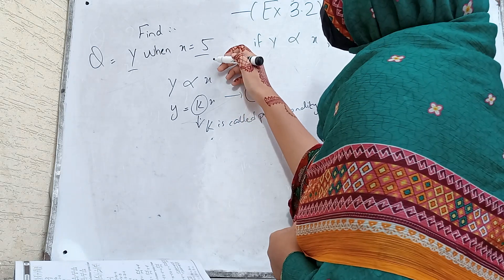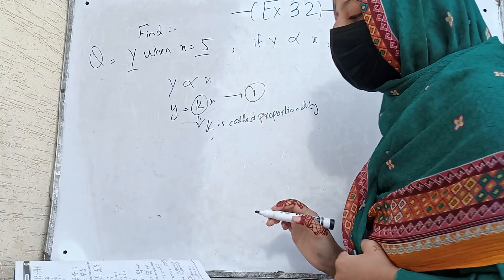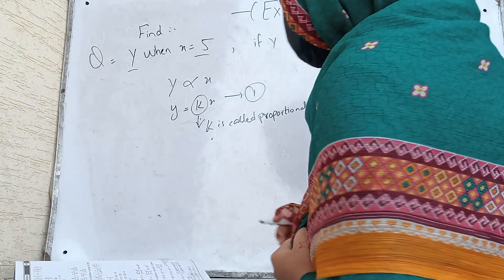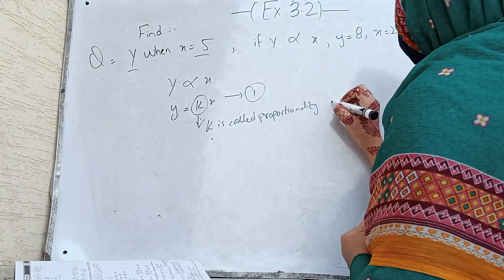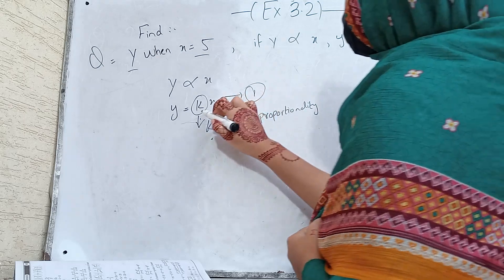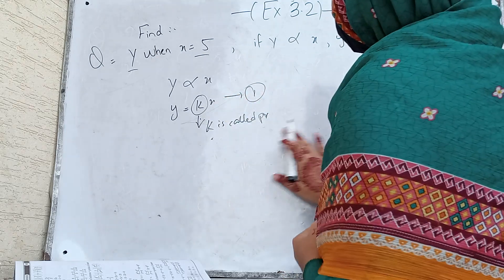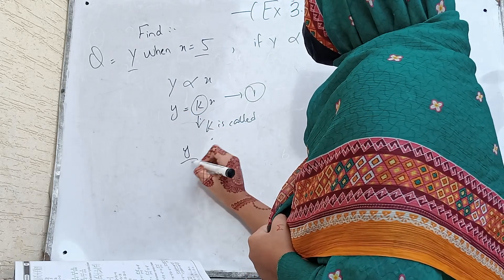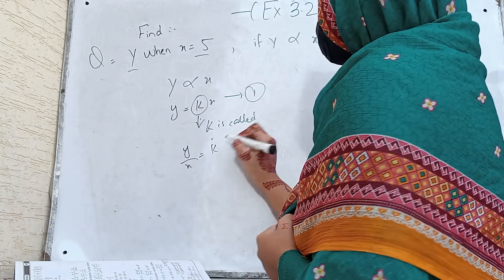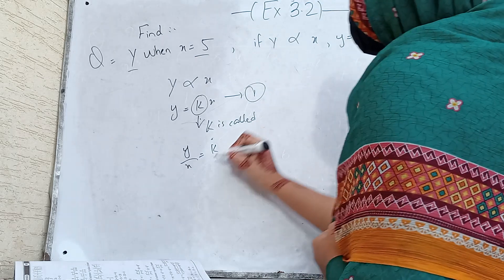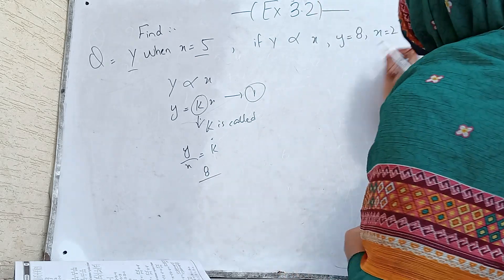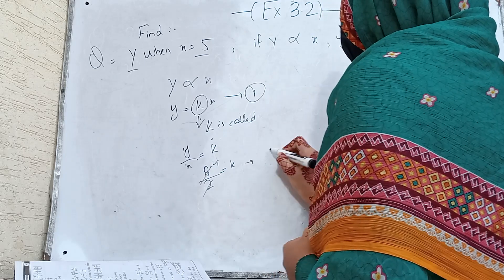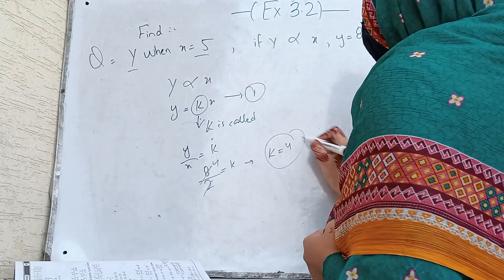We know the value of k from y divided by x equals k. With y equal to 8 and x equal to 2, k equals 8 divided by 2, which is equal to 4. So k is equal to 4.